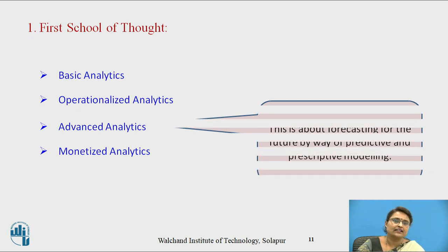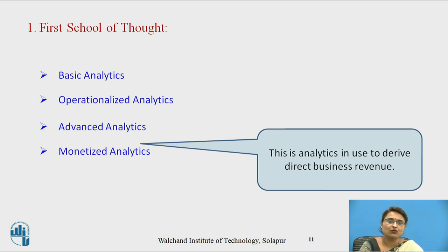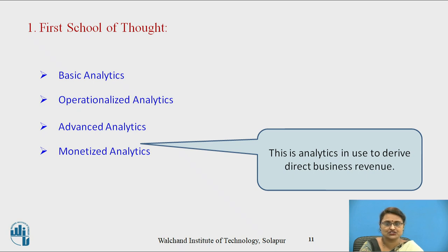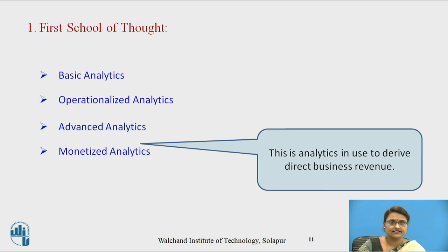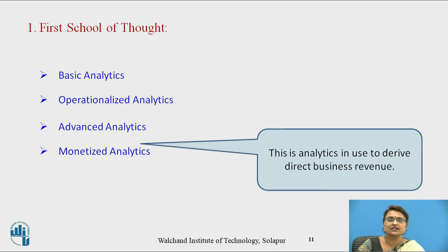Next comes monetized analytics. It is about deriving business revenue — the business operates according to this analytics, and major decisions for the business are taken using it. The analytics is totally monetized here for getting better business revenues. Overall, analytics has progressed from just getting historical data, to operational analytics, then advanced with prediction and prescriptive modeling, and finally it has been monetized.